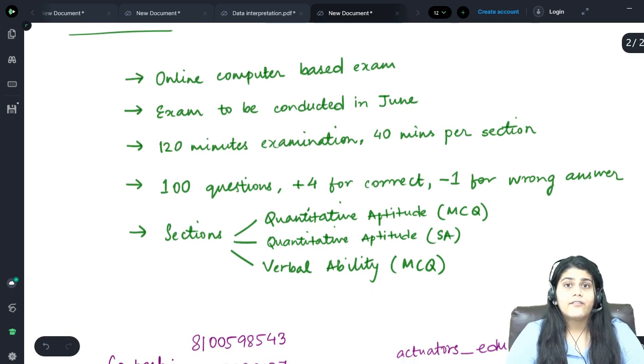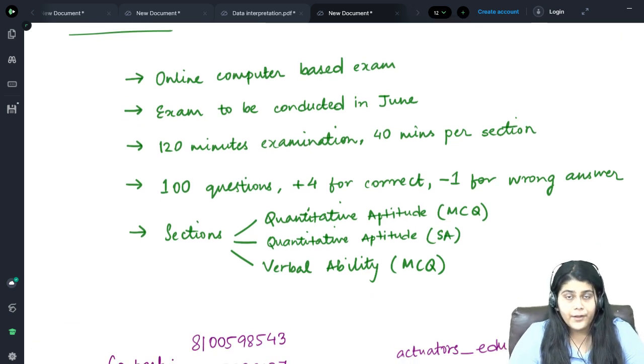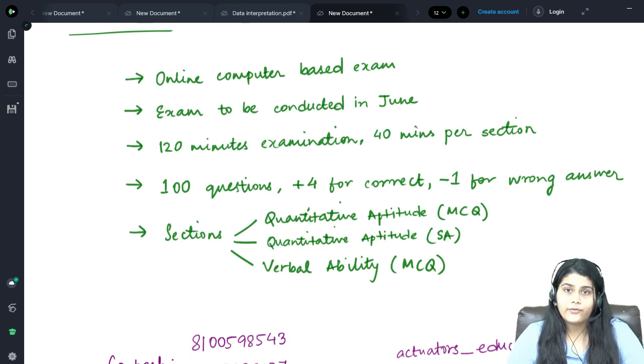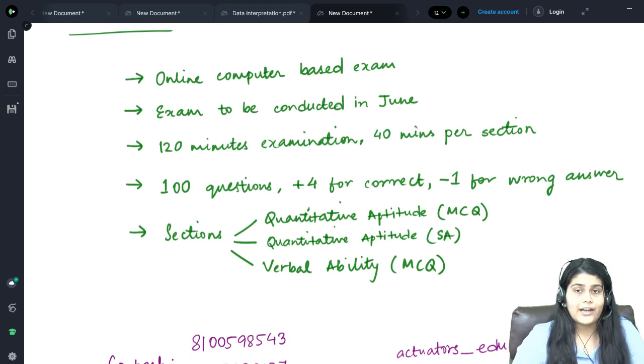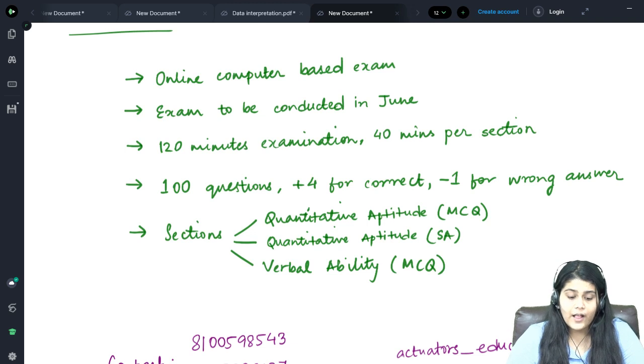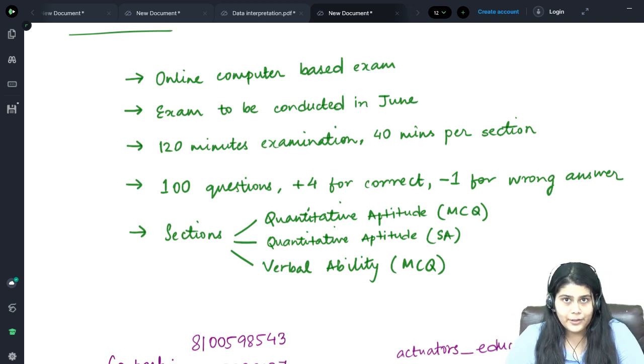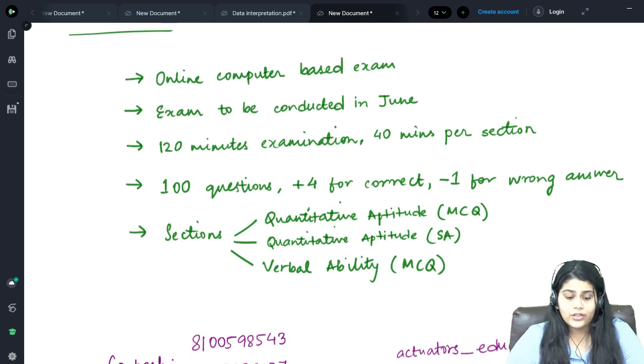The exam will be a 120 minute duration exam with a sectional time limit of 40 minutes each. There are 3 sections in the examination. The first one is the Quantitative Aptitude section where there will be MCQs. The other section is the Quantitative Aptitude section but here instead of MCQs there will be short answers. And the last section is the Verbal Ability section which will again consist of MCQs.